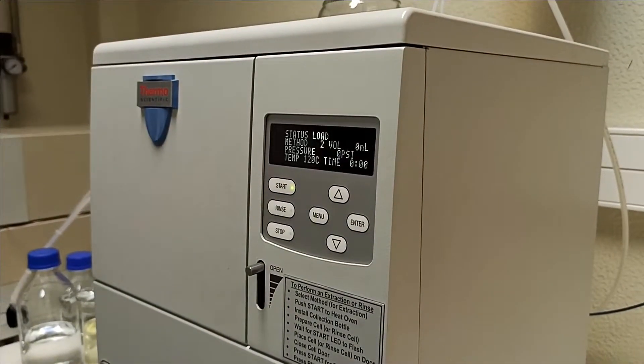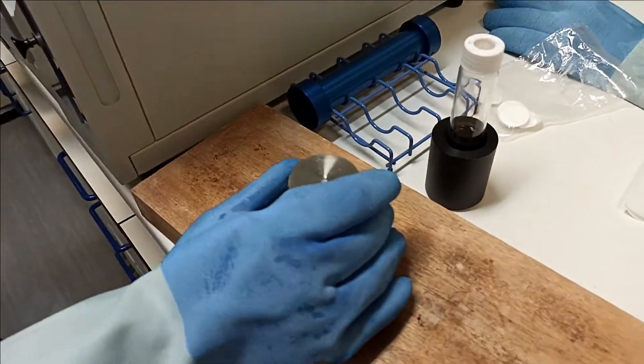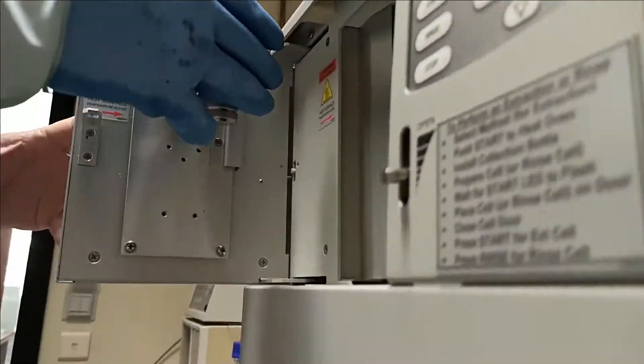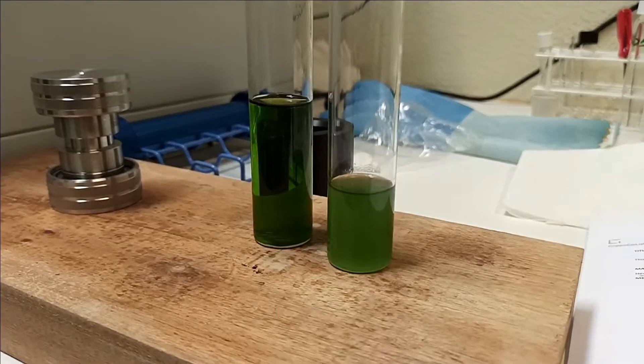Now run the protocol and wait until the oven temperature is at 120 degrees. After this step you may insert the sample cell. Press start and after a while we have both our extracts.